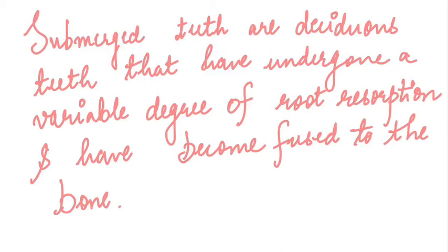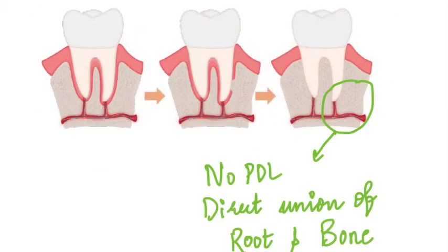The first consequence is that such deciduous teeth will never exfoliate, because there is no periodontal ligament. As we know, the periodontal ligament plays a very vital role in both exfoliation and eruption. Without it, due to direct fusion of the root to the bone, there is no exfoliation. Over time, when the permanent tooth erupts, the ankylosed tooth appears to be situated below the level of occlusion, and this can result in malocclusion.